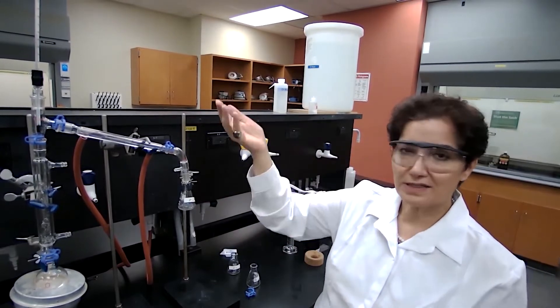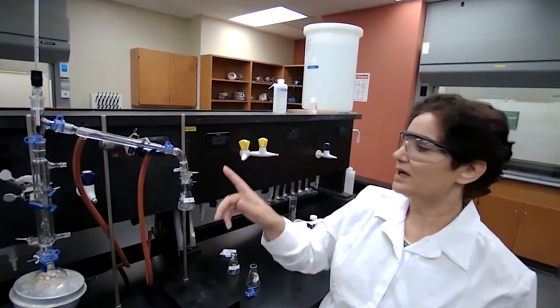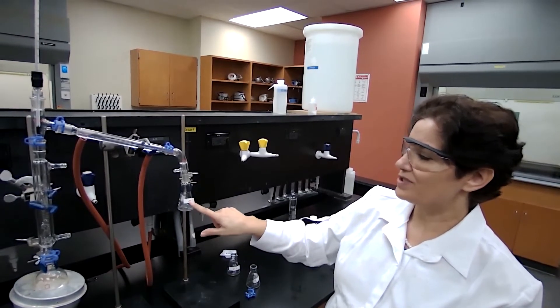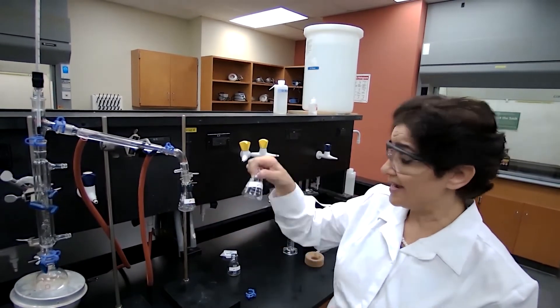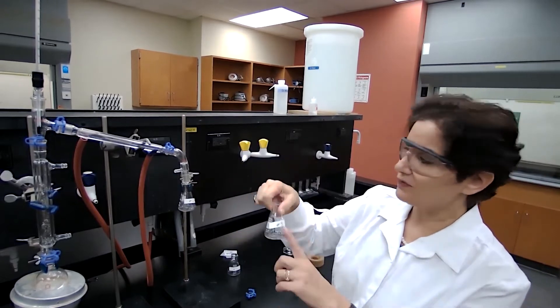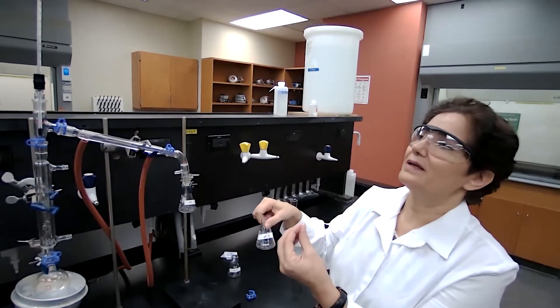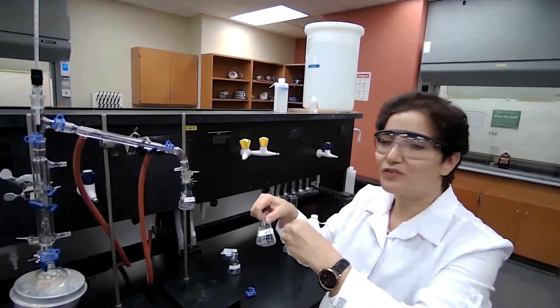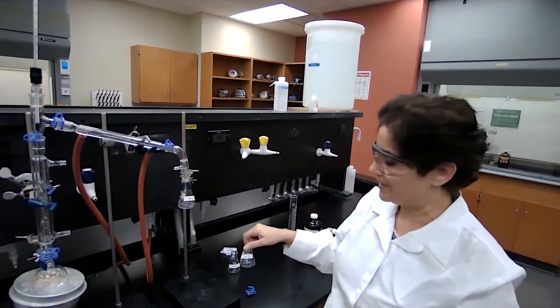When the temperature increases or starts increasing, I'm going to switch the flask from fraction two to fraction three. And in this flask, I'm collecting the sample that I don't use it, but it's like between the two samples. So it could have some contamination.